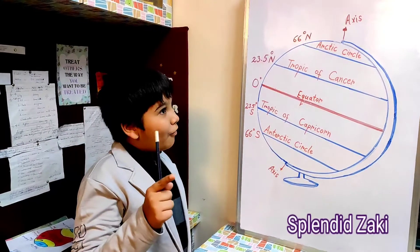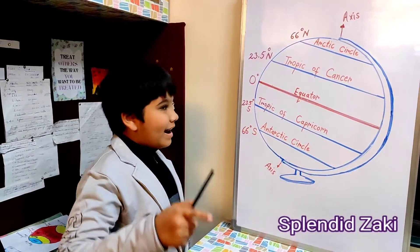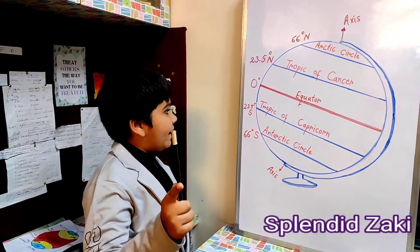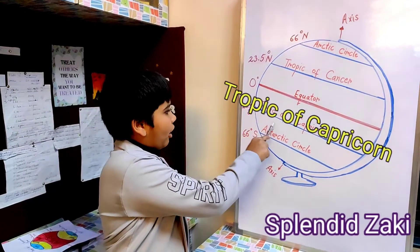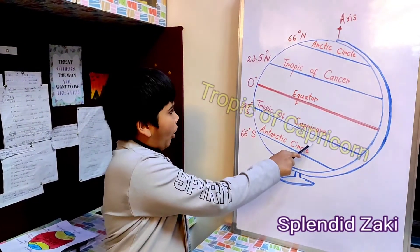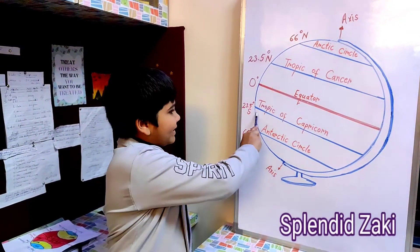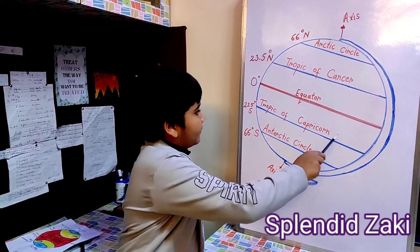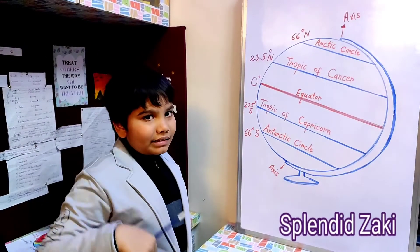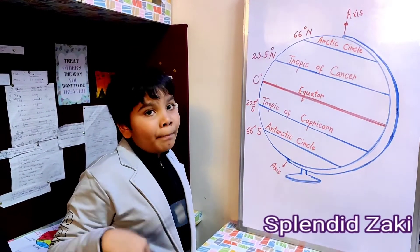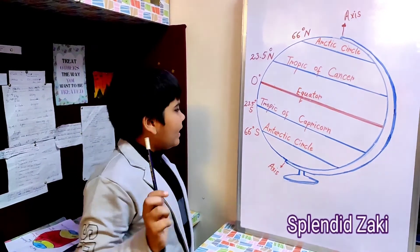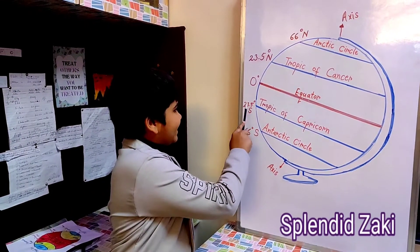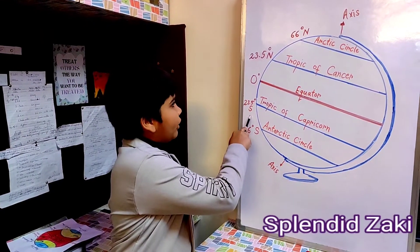Now, let us see another imaginary line known as the Tropic of Capricorn. This is the Tropic of Capricorn, also known as the Southern Tropic. It marks 23.5 degrees south on the globe.